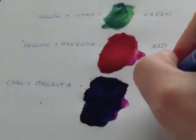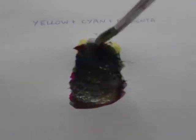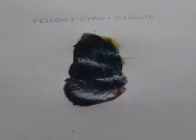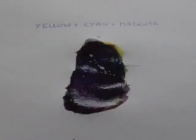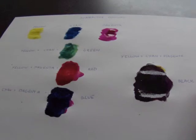We can also observe that if we mix all three primaries together — yellow, cyan, and magenta — we'll get the color black. So all those are the specifications of subtractive colors.